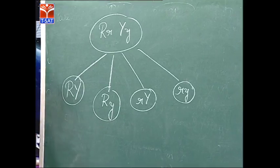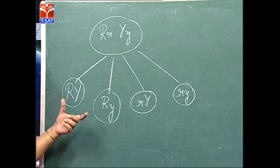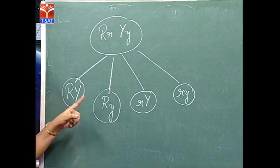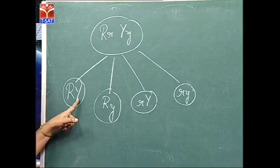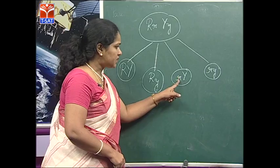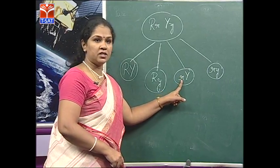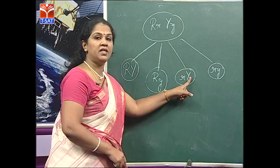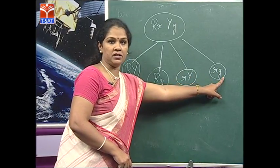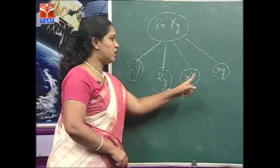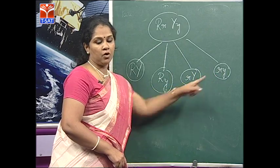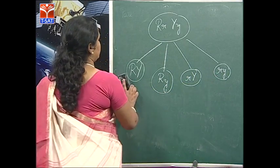All possible gametic combinations are possible in equal proportions. The law of independent assortment states that the dominant allele independently pairs with another dominant allele as well as a recessive allele. Similarly, the recessive allele of one character equally pairs with the dominant allele of another character as well as the recessive character.